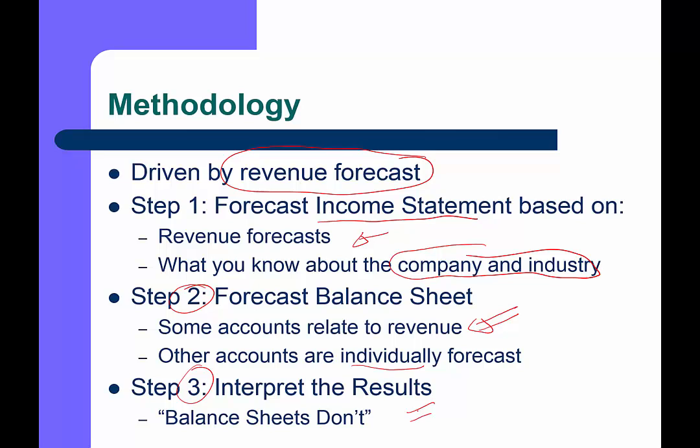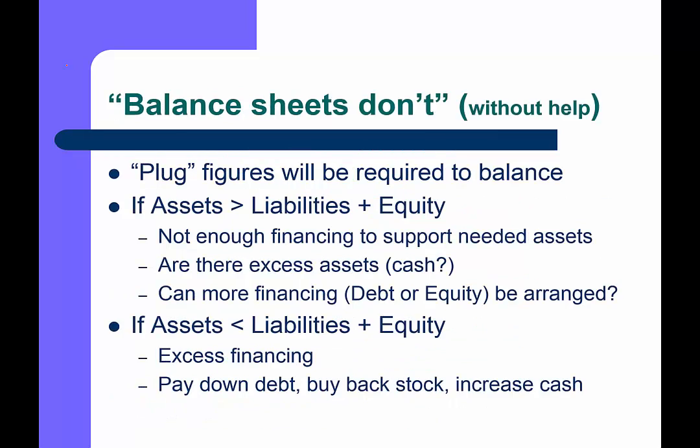Step three is interpreting the results. One key thing to say is that balance sheets don't balance. In forecasting, we are estimating the likely values of all the different accounts on an individual basis. You can do a thousand of these over your career and never exactly balance when you're done — that's normal. We'll need what we call a plug figure, a number we add somewhere, and that number will be very important in determining what the analysis means.